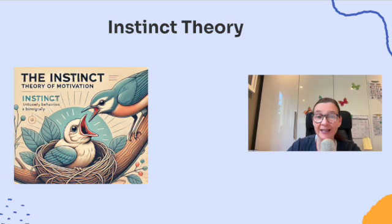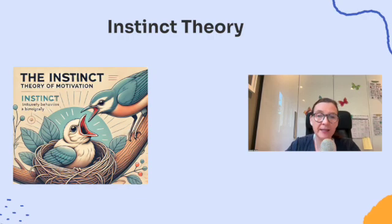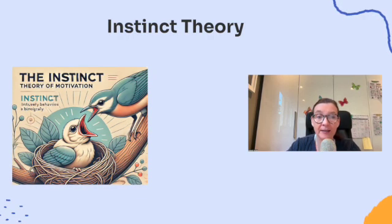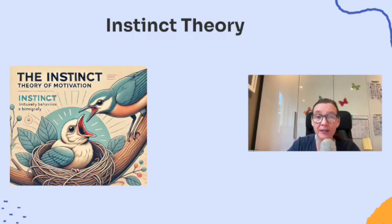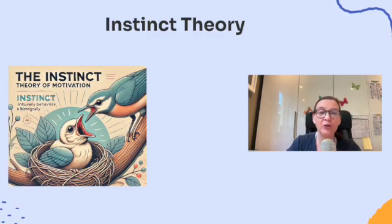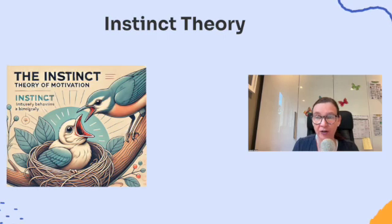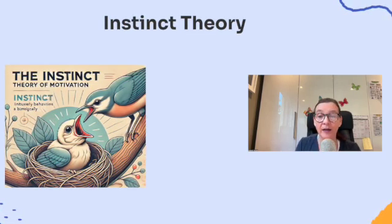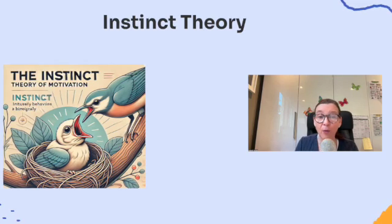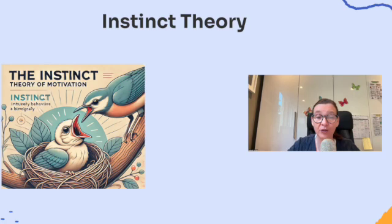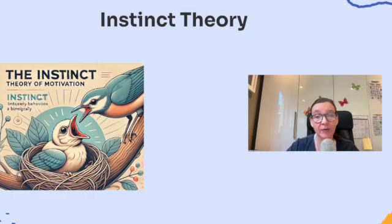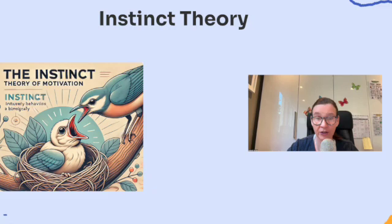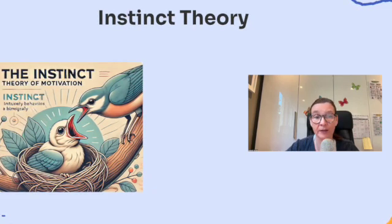Now let's talk about instinct theory — a fascinating concept explaining why animals and sometimes humans behave the way they do. It's the idea that certain behaviors are driven by instincts: innate, fixed patterns of behavior triggered by specific stimuli. These behaviors aren't learned — they're hardwired responses. Birds migrating thousands of miles each year is instinctual; spiders are born knowing how to spin intricate webs. The key difference is that while animals rely heavily on instincts, humans don't exhibit many instinctual behaviors — we rely on learning and adapting to our environment.